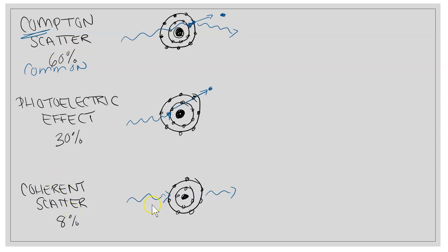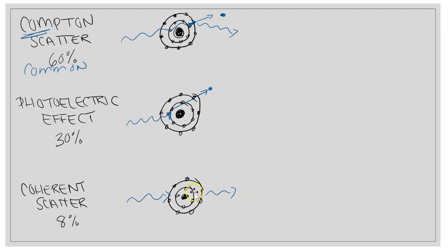Coherent scatter is when the photon hits an atom, nothing happens — no electron is kicked out — and then the photon just scatters somewhere else. No ionization occurs here. Coherent scatter happens 8% of the time. It's not harmful because no ionization occurred, but the radiation still goes where we don't want it, degrading the image.